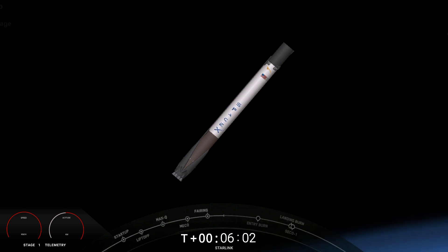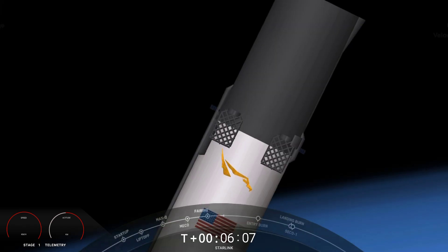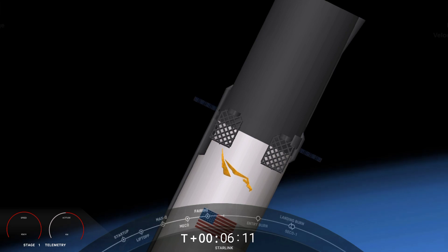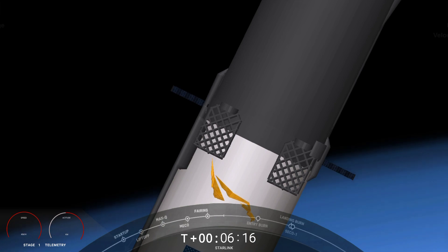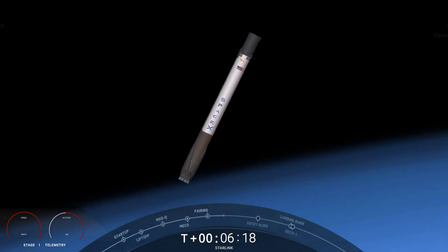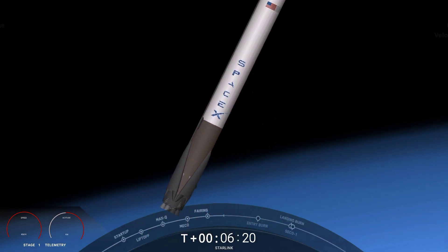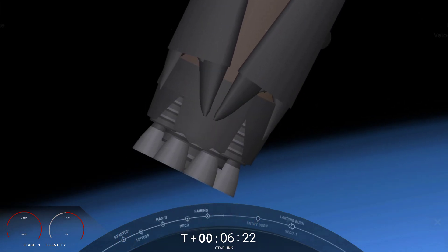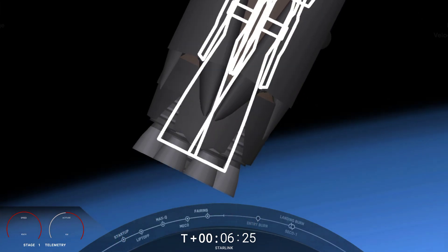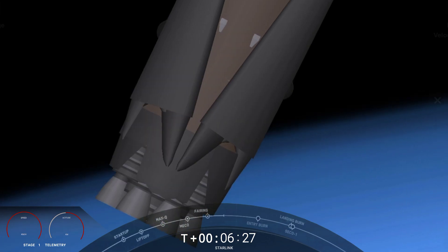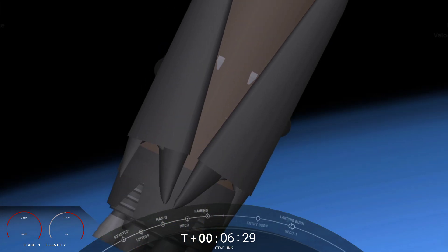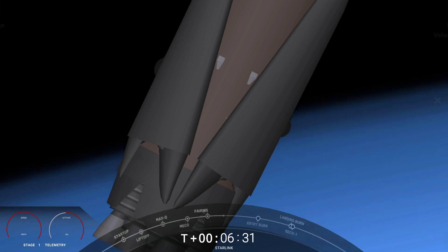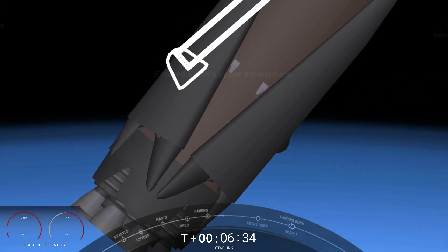We're just under 45 seconds away from the first of those two burns, the entry burn on the first stage. It is a three-engine burn to slow the stage down before hitting the thicker parts of the Earth's atmosphere. It is continuing to go smoothly for our second stage.